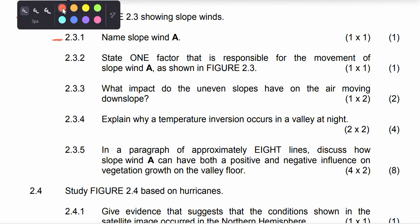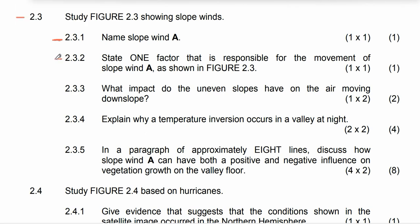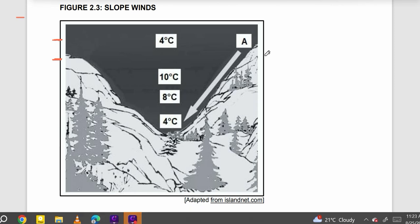I hope you understand — as mentioned, katabatic winds occur during the night, while anabatic winds occur during the day. Now, question 2.3.2 asks us to speak to one factor that is responsible for the movement of slope wind A, which is the katabatic wind, as shown in the diagram.